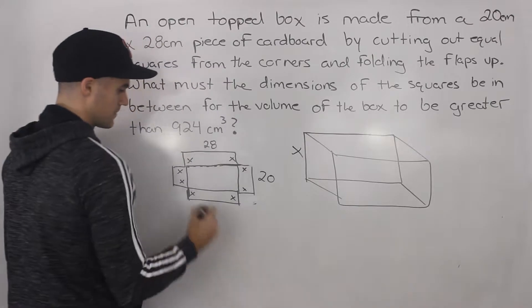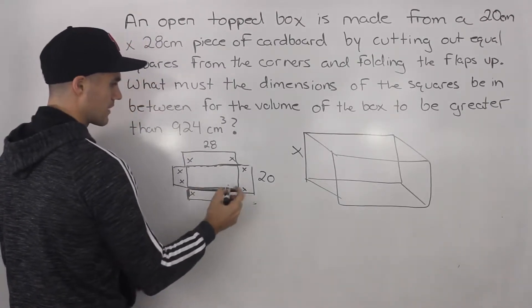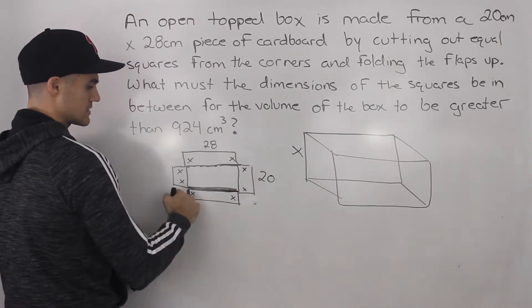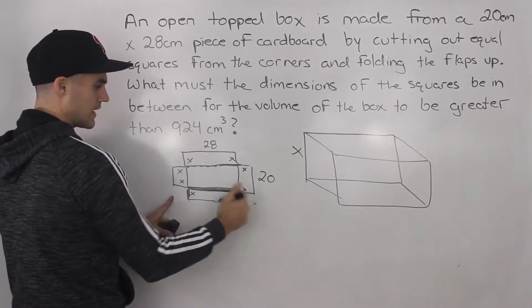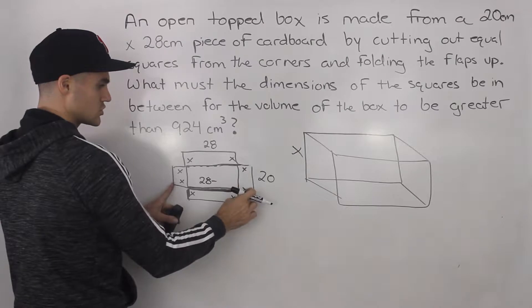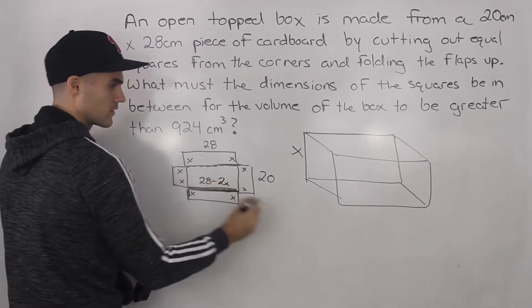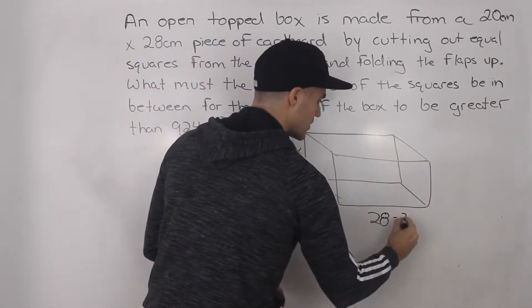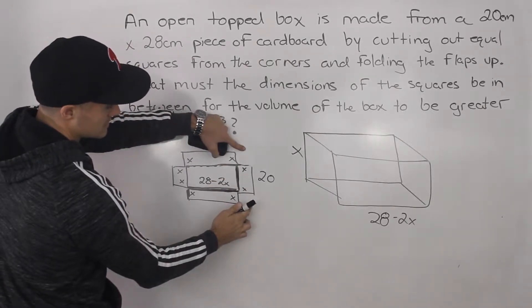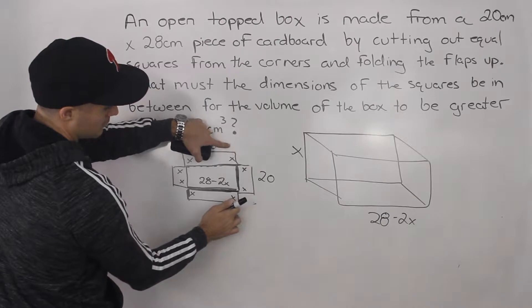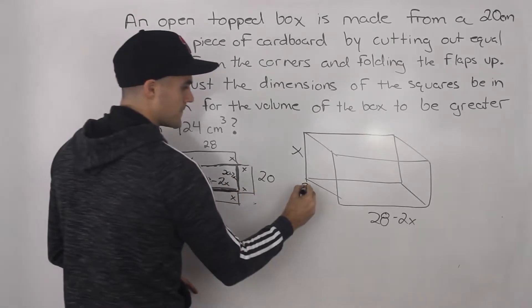What is the width and the length going to be? The length of the base — the full length before we cut out these corners was 28. So it's 28 minus 2x, since both of these x values we are folding up. So this length here is going to be 28 minus 2x. Then same thing — this width here is going to be 20 minus 2x.